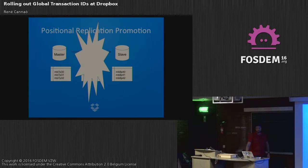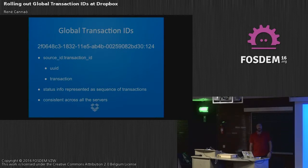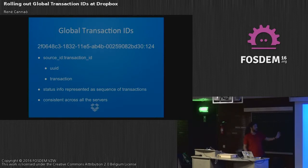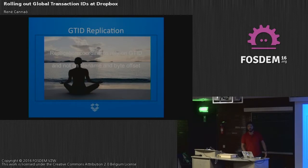This is where GTID comes in and plays a very important role. A Global Transaction ID looks like a long string divided into two parts: the first part is the source ID — a representation of the server that generated the binary log event — and the second part is an incremental transaction ID. Crucially, this information identifies one transaction and is consistent across all servers, so any server looking up a specific GTID will find exactly the same information.